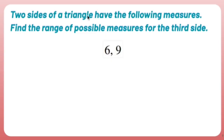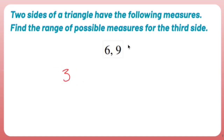The two sides of a triangle have the following measures. Find the range of possible measures for the third side. Simple. What you do is you take these numbers and you subtract the largest from the smallest — that's three. Then you add these two — that's 15.